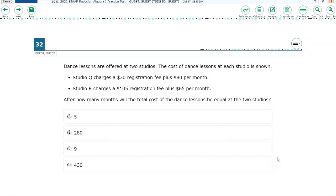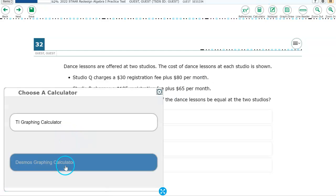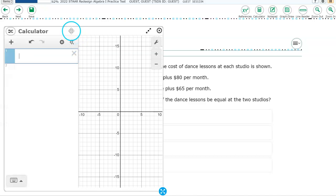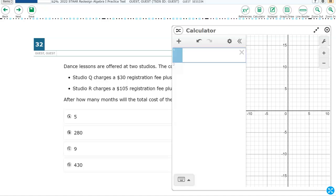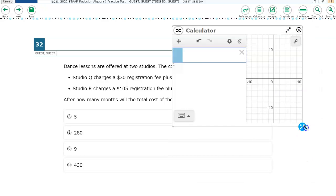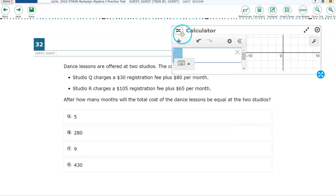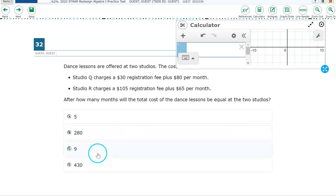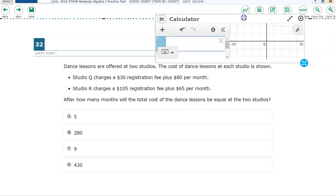Okay, so hopefully you have found question number 32. To do this item, we are going to use the calculator. Click the button and choose Desmos Graphing Calculator. And then we're going to move this over. Dance lessons are offered at two studios. The first studio is Q. It charges $30 plus $80 per month. That per month is kind of important because that's telling you what the slope is going to be.